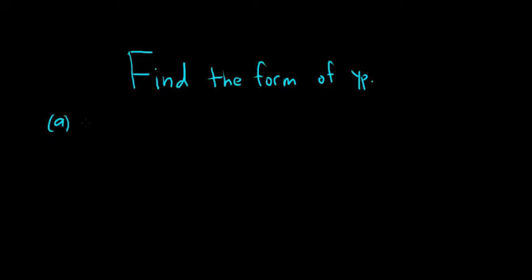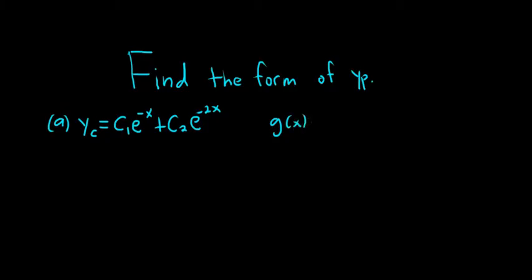Example A. We're given the complementary function — the solution to the homogeneous differential equation — Yc equals C1 e to the negative x plus C2 e to the negative 2x. And then we're given the right-hand side of the DE, which I'll call g of x. So g of x is equal to 10. The question is to find the form of Yp.